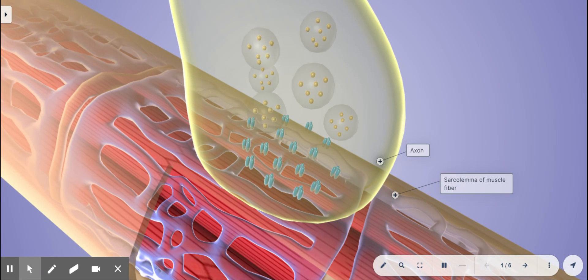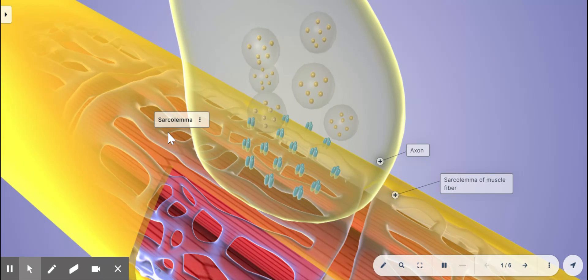Acetylcholine then diffuses across the synaptic cleft and attaches to acetylcholine receptors on the sarcolemma, which is this membrane that surrounds the muscle cell.